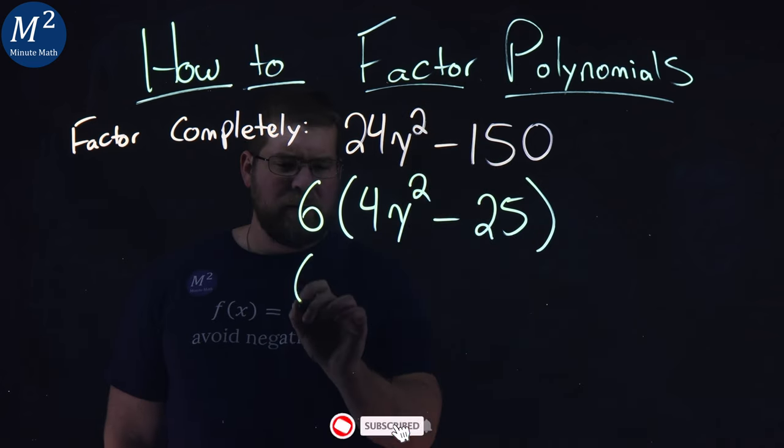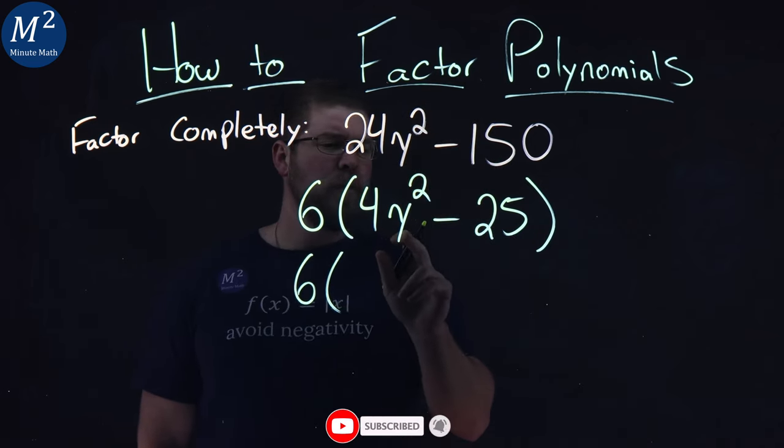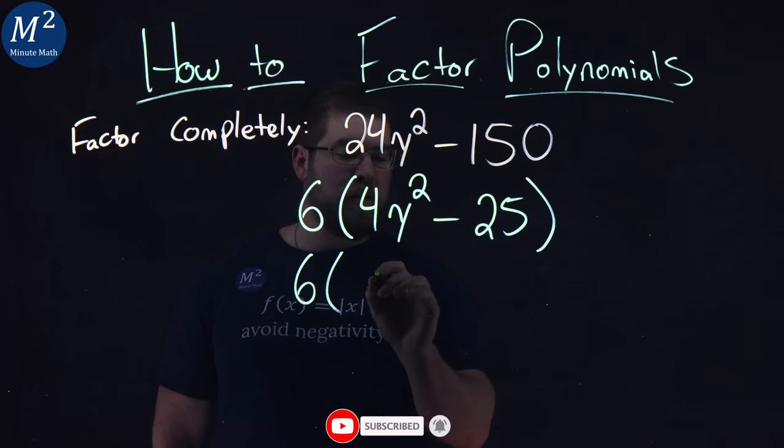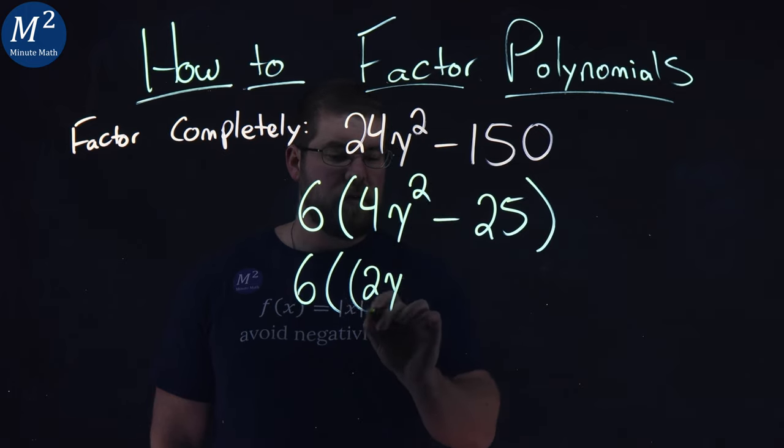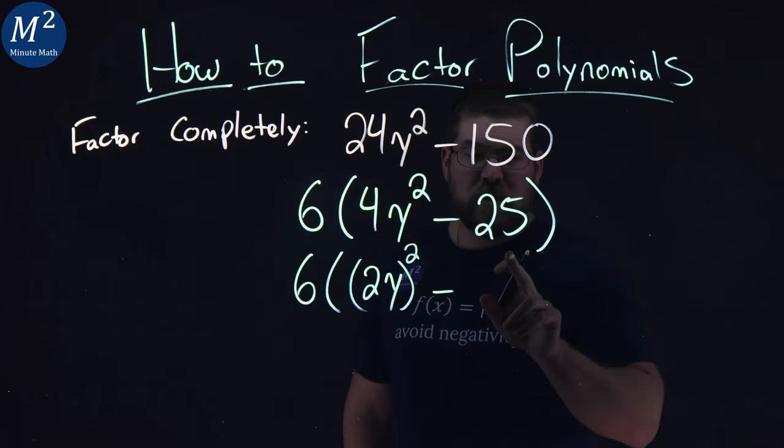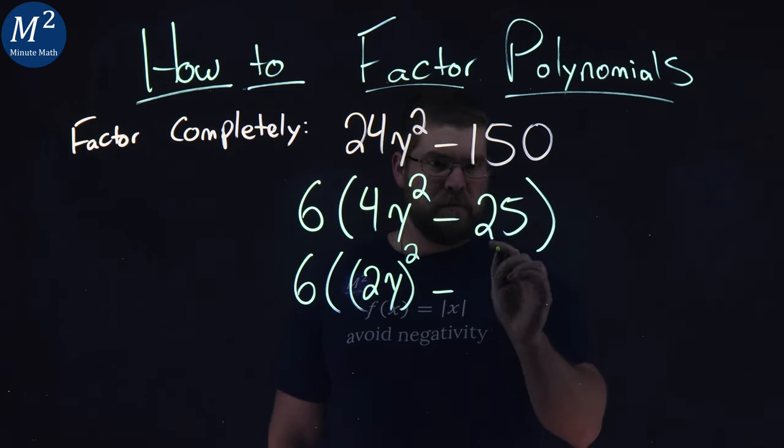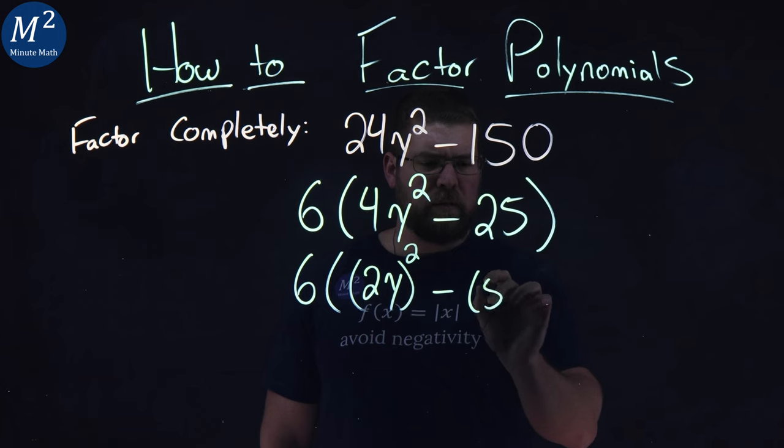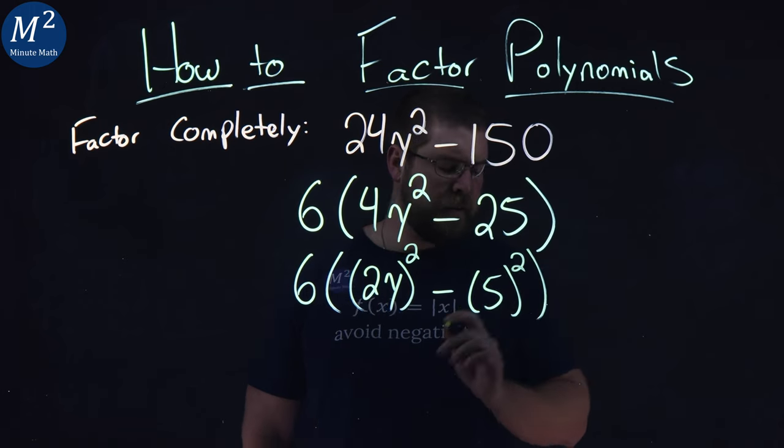Let's rewrite this as 6 times, instead of 4 times y squared, I can write this as 2y all squared minus the 25 here being a 5 squared. Right there.